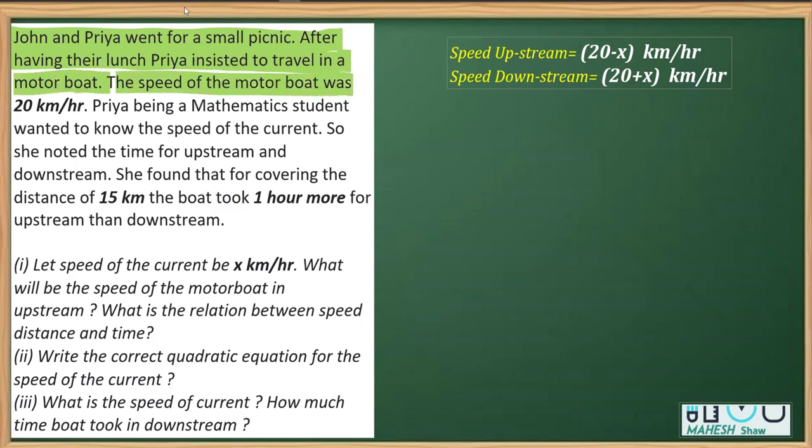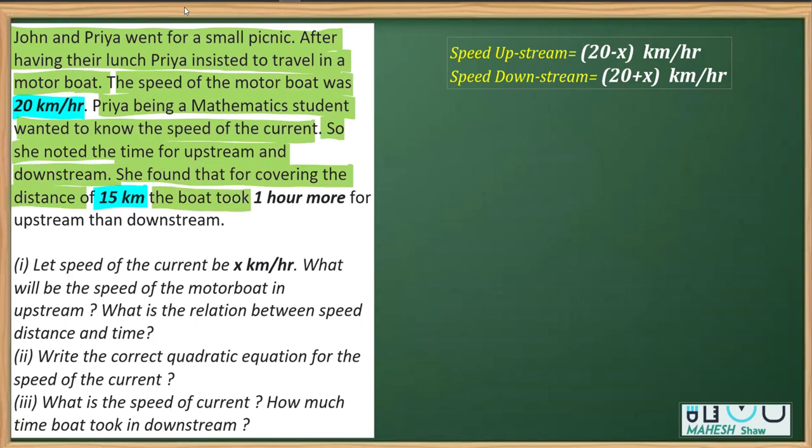they insisted on travel in a motorboat. The speed of the motorboat is given as 20 kilometers per hour, and Priya, being a mathematics student, wanted to know the speed of the current, so she noted the time of the upstream and the downstream, and what she found that the distance which they covered was 15 kilometers both way while going or coming. And she found that while covering, it takes one hour more for the upstream,